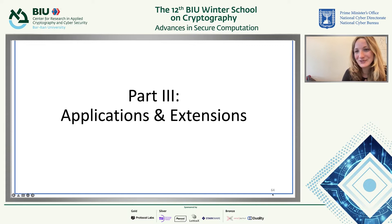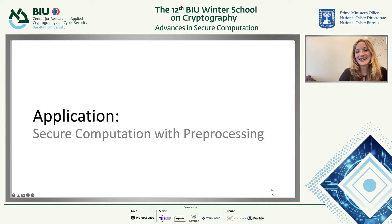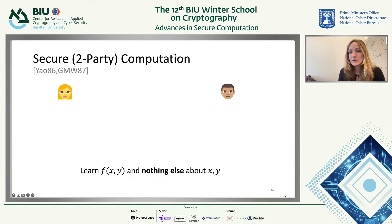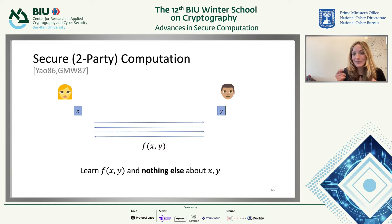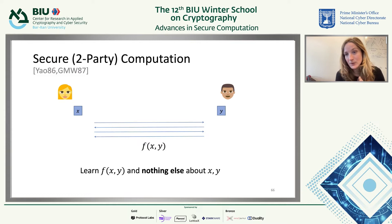Let me start with an application that's a bit different from what I've been talking about, which is secure computation with pre-processing. Let me say a few words about what secure computation is. If you haven't seen secure computation, I'm going to consider two parties — think Alice and Bob. This is a setting where the parties have secret inputs X and Y, and they want to talk to each other to learn some function F evaluated on X and Y, but nothing else about X or Y.